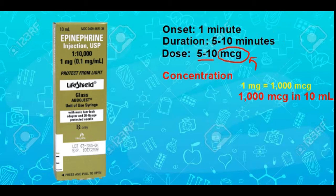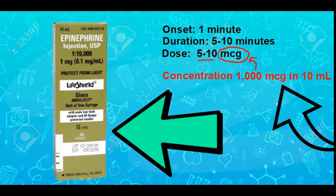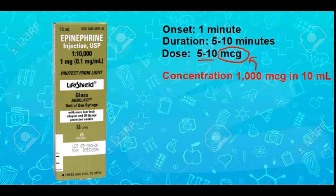So let's get rid of the milligrams and just deal with micrograms. The concentration of that whole vial of epi is a thousand micrograms in ten milliliters. Concentrations are usually expressed in units per one milliliter, so we divide a thousand by ten and wind up with a concentration of one hundred micrograms per milliliter.